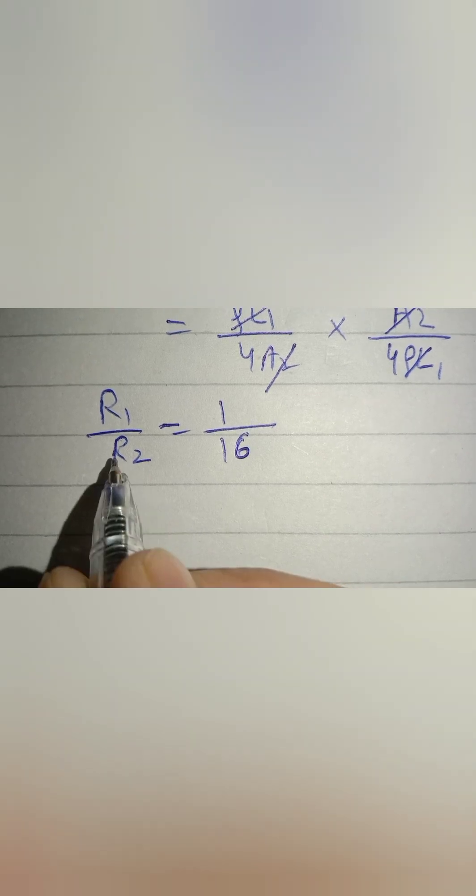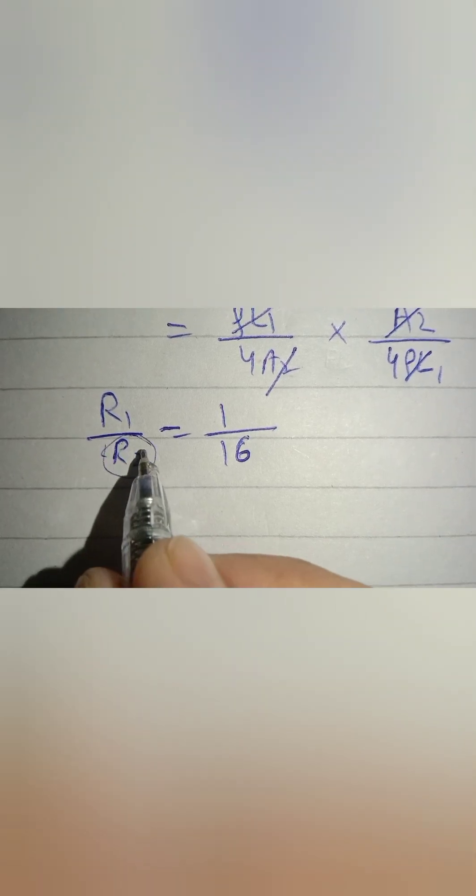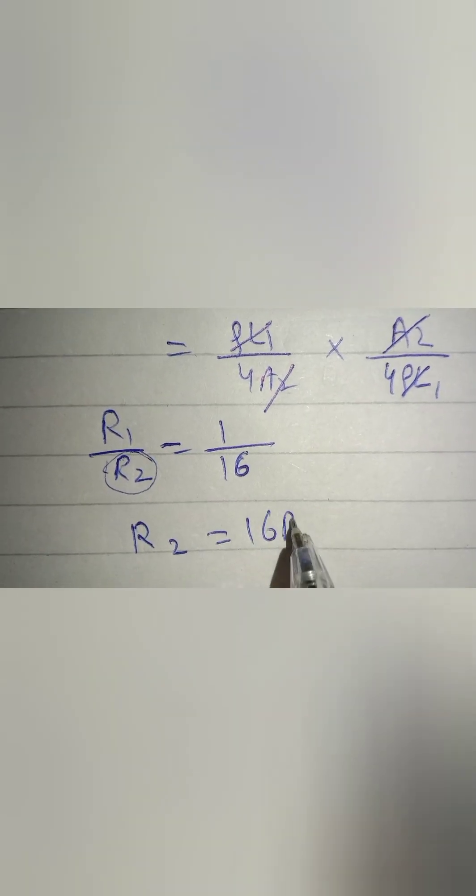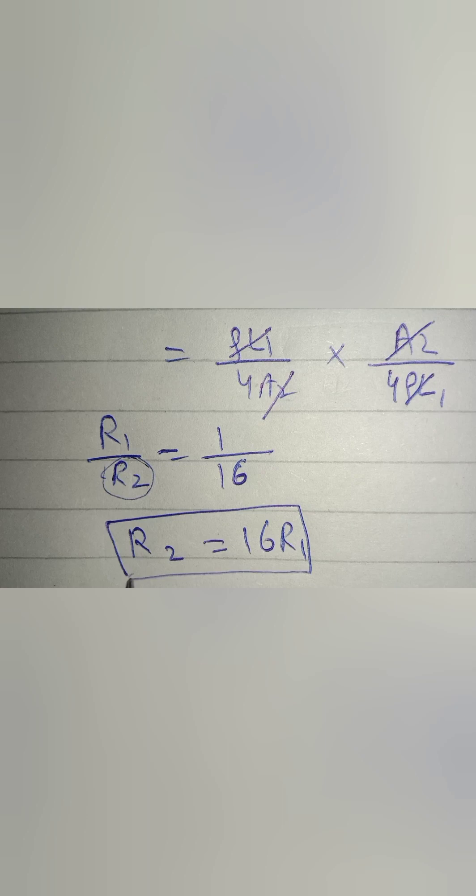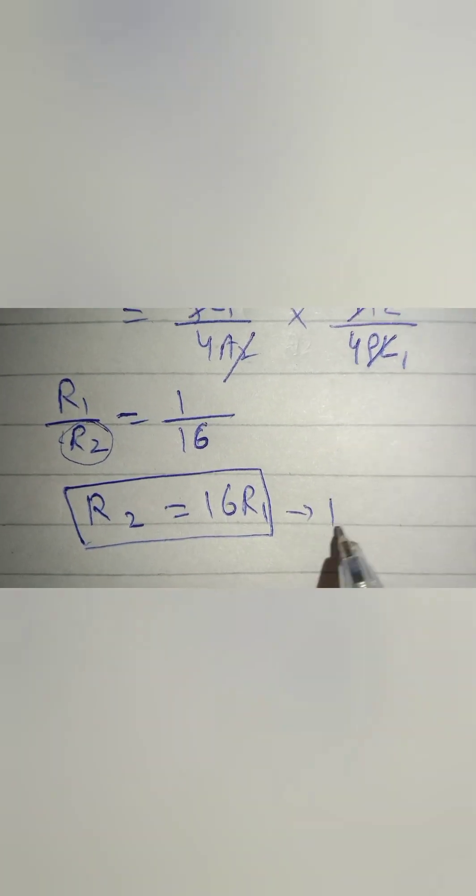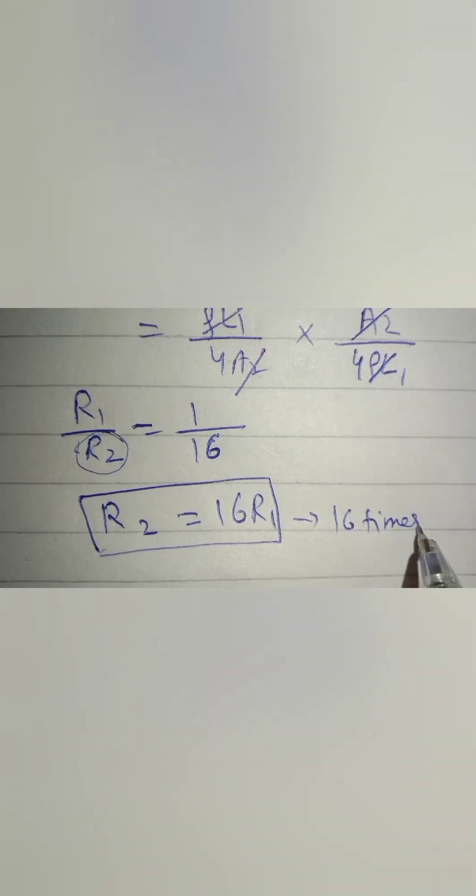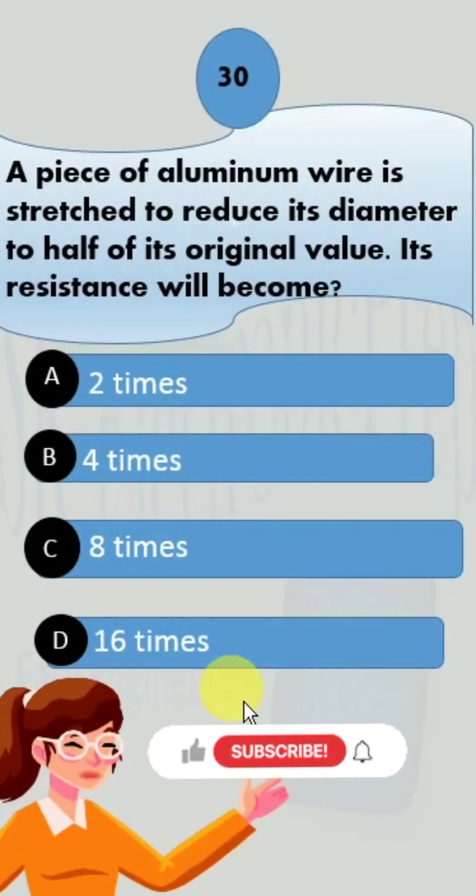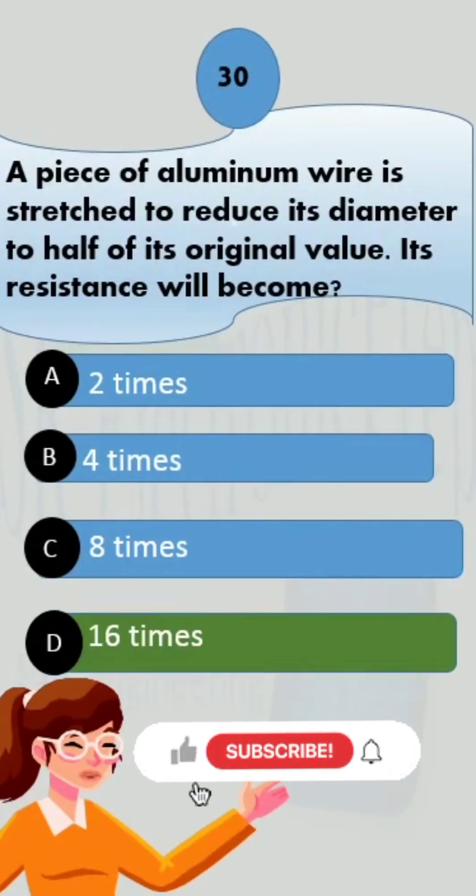R1 over R2 equals 1 over 16. As we have to find the value of R2, so we arrange the equation in terms of R2. R2 equals 16 times R1. Hence our answer to the question becomes 16 times. If we look at our options, it is option number D, and it is the correct answer.